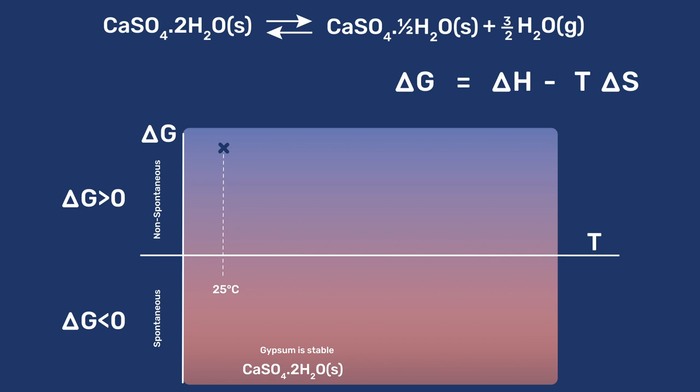When temperature increases, delta G decreases because of the term minus T delta S. Delta G eventually becomes negative, which means that the stable phase is then hemihydrate.